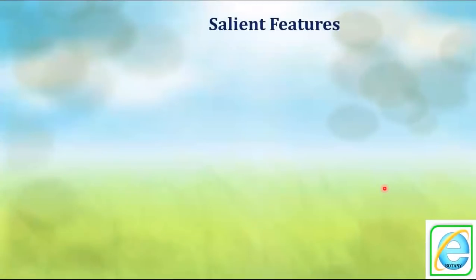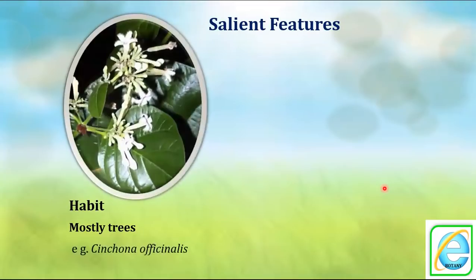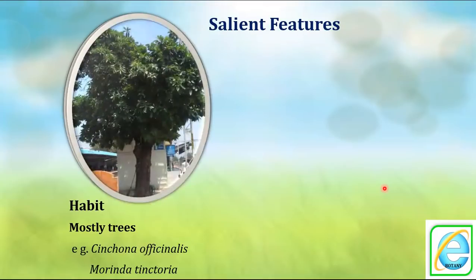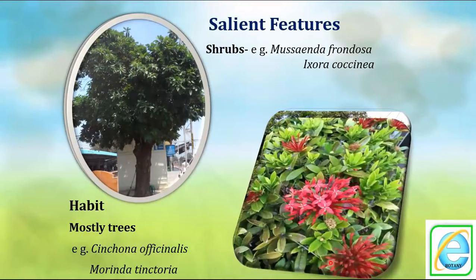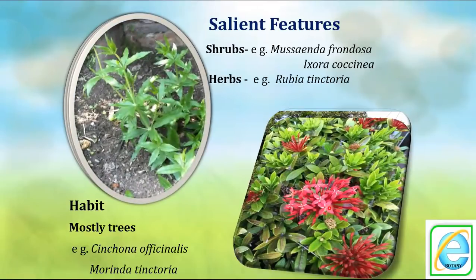The first salient feature of the Rubiaceae family is the habit. This family has three kinds of habit: trees — for example Cinchona officinalis, having a strong wood system, and Morinda tinctoria, also a tree. Some are shrubs, bushy in nature, like Mussaenda frondosa. Some are ornamental plants like Ixora. Some plants are herbs with a weak stem — example is Rubia tinctoria.